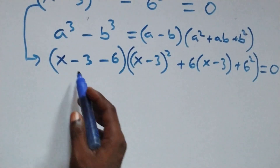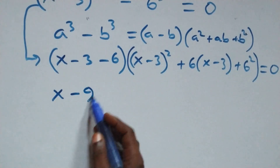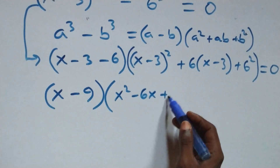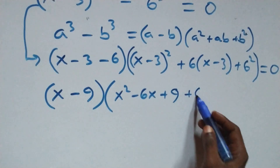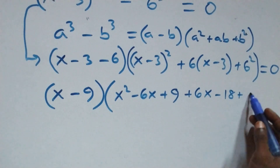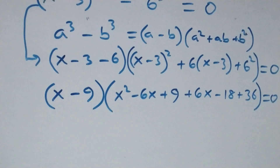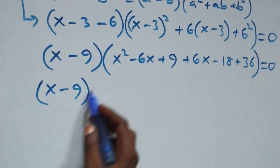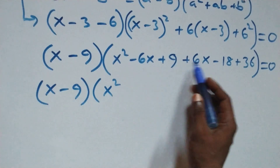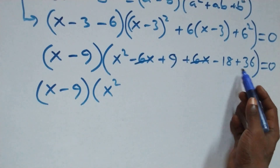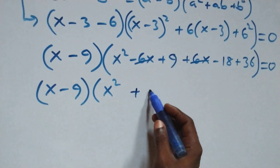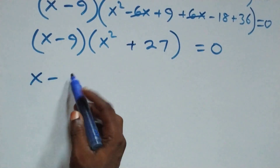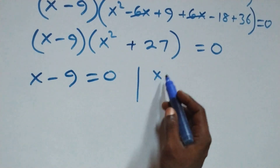This simplifies as (x minus 9) into brackets, then open brackets — expanding gives x squared minus 6x plus 9, plus 6 open bracket: plus 6x minus 18, then plus 36, close brackets. So x squared minus 6x plus 6x cancel out, minus 18 plus 36 is 18, plus 9 gives 27, so plus 27, close bracket, equals to 0.